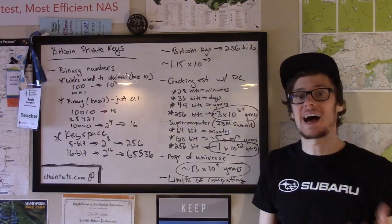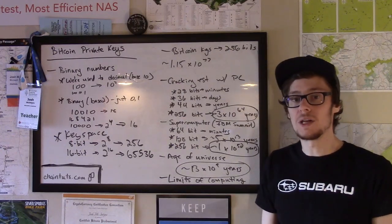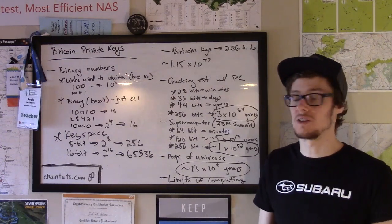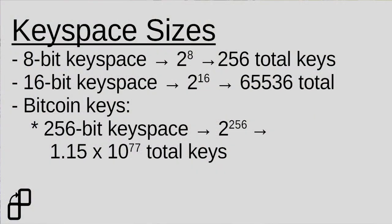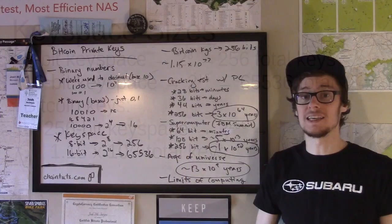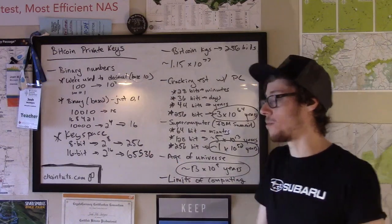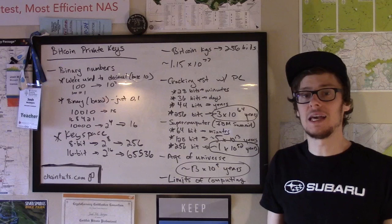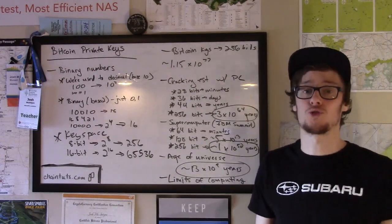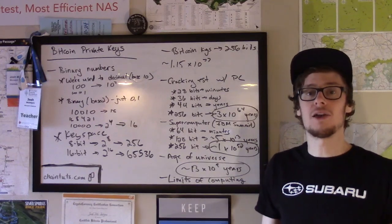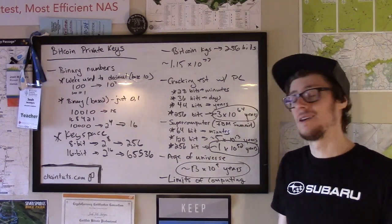Now let's talk about sizing key spaces. If we have an 8-bit private key for some crypto system, we have 8 places in our number, giving a limited number of combinations. Since we have 8 slots and each can contain 0 or 1, we have 2 to the 8th power total possible keys, which works out to 256. With only 256 possible keys, anyone with even a Raspberry Pi or a cell phone could iterate through all of them in a split second and steal your money.